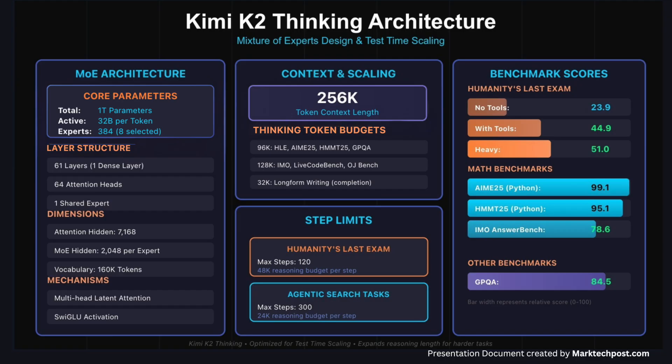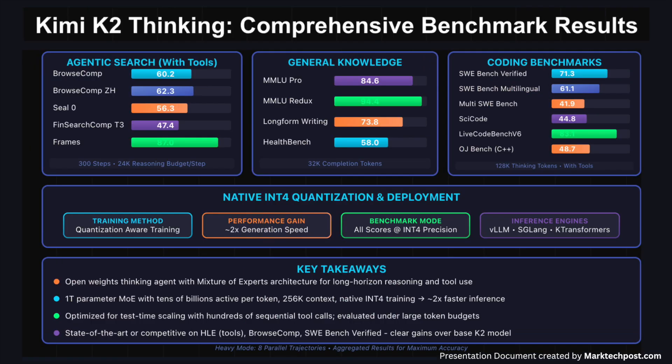Kimi K2 Thinking is explicitly optimized for test-time scaling. The model is trained to expand its reasoning length and tool call depth when facing harder tasks, rather than relying on a fixed short chain of thought. On agentic search tasks with tools, K2 Thinking reports 60.2 on BrowseComp, 62.3 on BrowseComp ZH, 56.3 on Seal0, 47.4 on FinSearchComp T3, and 87.0 on Frames.